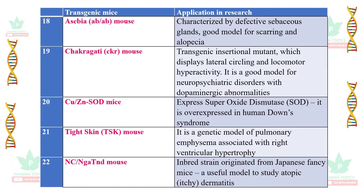The ACBIA/AB mouse is characterized by defective sebaceous glands and is a good model for studying alopecia. The Chakragatti (CKR) mouse is a transgenic insertional mutant which displays lateral circling and locomotor hyperactivity, and is a good model for neuropsychiatric disorders with dopaminergic abnormalities.